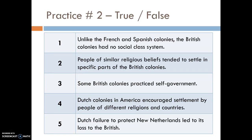Because the Dutch government didn't really supervise or protect the colony, it was easily captured by the British in 1664 and absorbed into the British colonies, though much of the economic influence developed under the Dutch continued. Practice number two: mark these true or false. One: unlike the French and Spanish colonies, the British colonies had no social class system. Two: people of similar religious beliefs tended to settle in specific parts of the British colonies. Three: some British colonies practiced self-government. Four: Dutch colonies encouraged settlement by people of different religions and countries. Five: Dutch failure to protect New Netherlands led to its loss to the British. Pause if needed — that concludes our lecture on the North American colonies of the British.